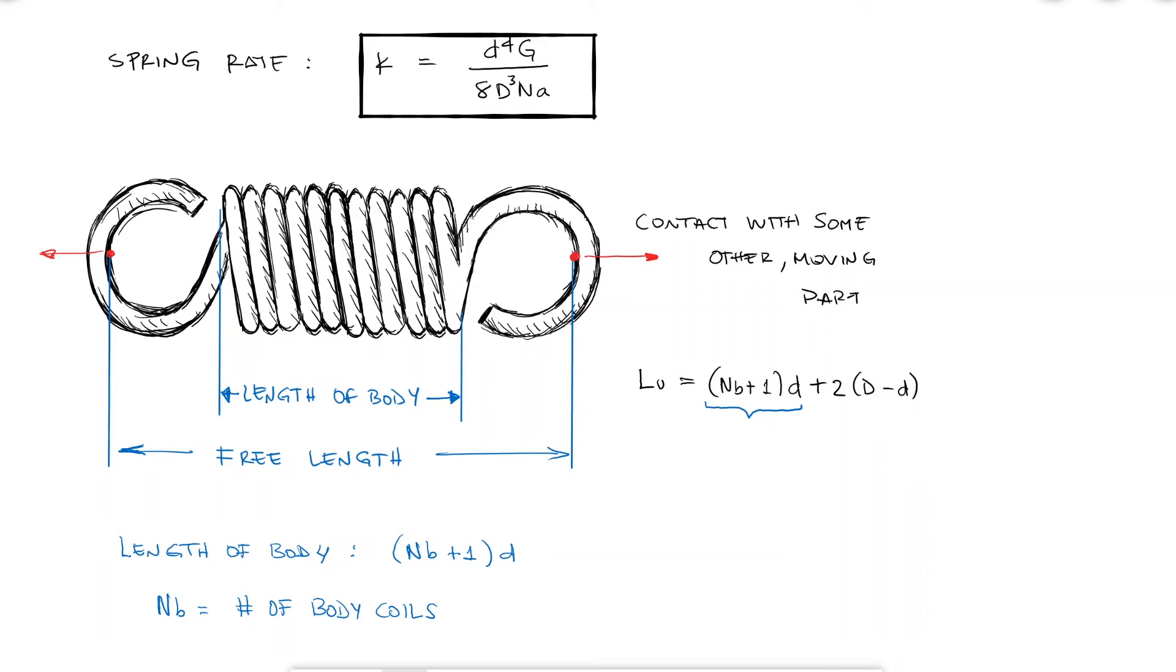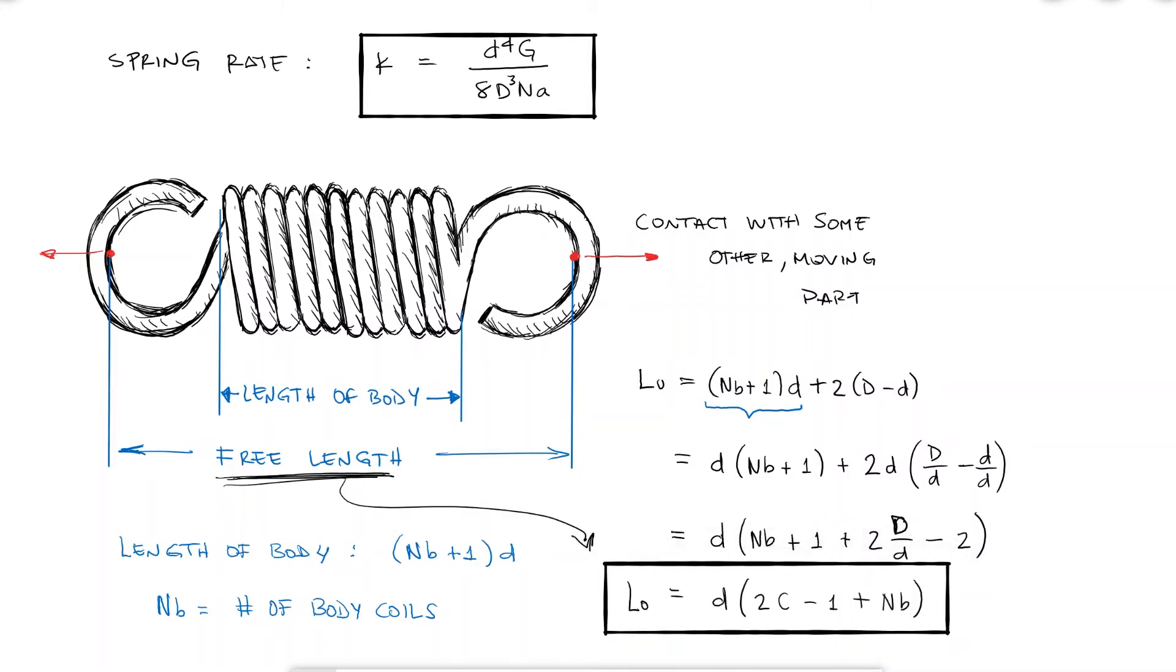This expression is usually simplified using the spring index C, again not related to the curvature coefficients C1 and C2, by factoring out a lowercase d from the second term. With the twisted end loops which is a very common spring geometry, the active coils variable Na which you would still use to calculate the spring constant k would be equivalent to the number of body coils plus the ratio between G and E, the shear and elastic modulus respectively.